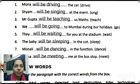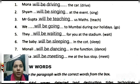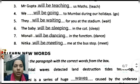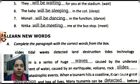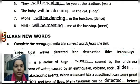Five: 'They will be waiting for you at the stadium.' They — a few people — will all be there at the stadium waiting for you. Six: 'The baby will be sleeping in the cot.' Seven: 'Monali will be dancing in the function.' Eight: 'Nikita will be meeting me at the bus stop.' Nikita will come to the bus stop and she will meet me.